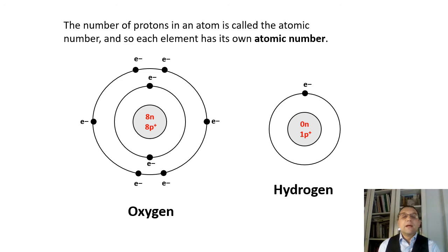The number of protons in an atom is called the atomic number, and each element has its own atomic number. So what would be the atomic number of oxygen? Eight.